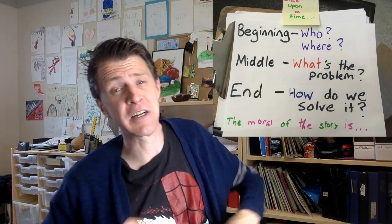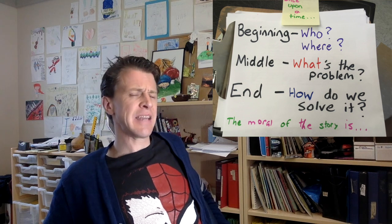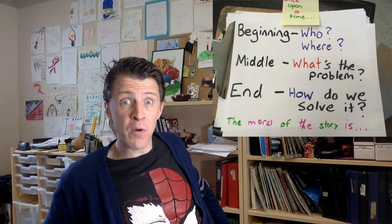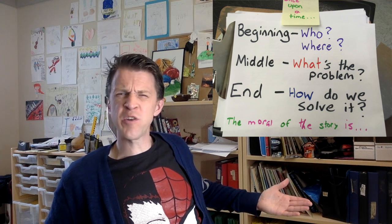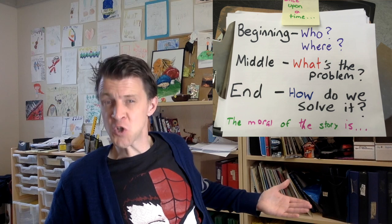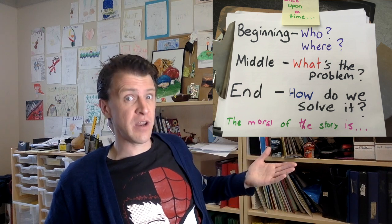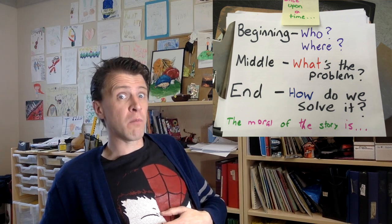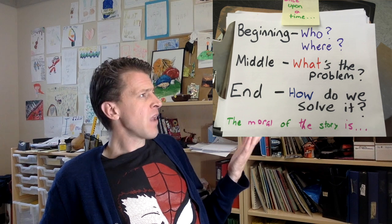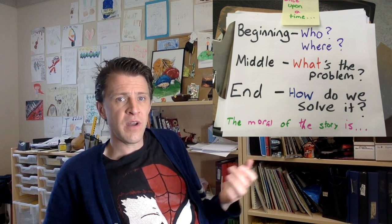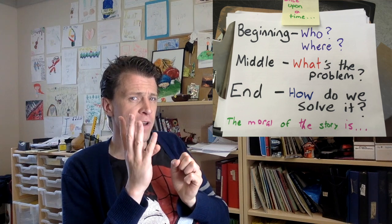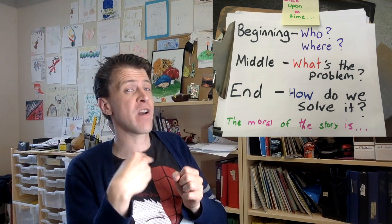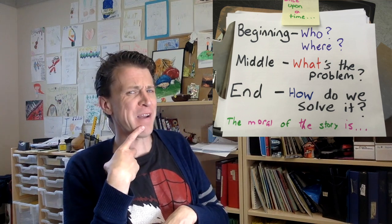Those are the four questions that you really need to answer in your story. Every story will be about someone — that's the 'who' — and they should be somewhere. By the middle of the story, your character should have a problem, because every good story has a problem. And at the end, you need to solve the problem. We usually end with 'the moral of the story is,' and back and forth one word at a time you come up with a moral — it might not always make sense, but that's fine.